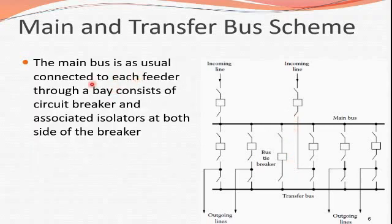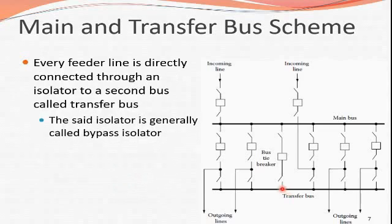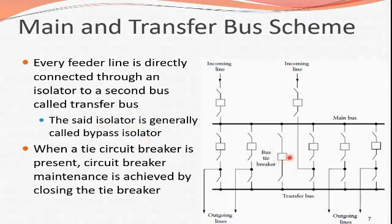The main bus is connected to each feeder. A bay consists of a circuit breaker and associated isolators on both sides of the breaker. Every feeder line is directly connected through an isolator to the transfer bus — this isolator is generally called a bypass isolator. Second breaker maintenance is achieved by closing the tie breaker.